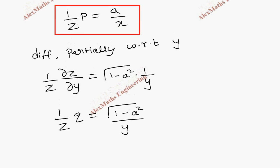So from these two, we can eliminate a. For that, we can substitute the value of a here. Or we can find a and equate both. So we will carry the x to the other side. So it is px/z is a. Now this a can be substituted in this place. So that will be much easier.